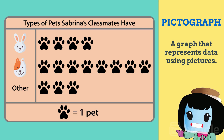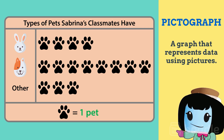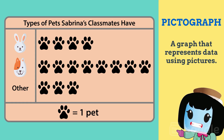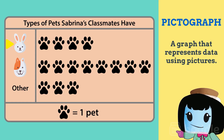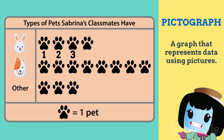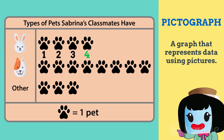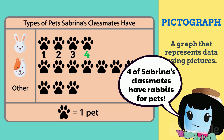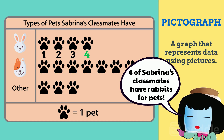Each pet they have is represented by a picture of a paw print. If you look at the part of the graph that represents rabbits, you can see that there are four paw prints. So that means that four of Sabrina's classmates have rabbits for pets.